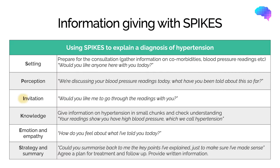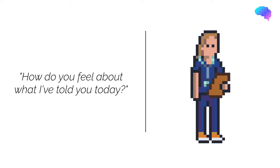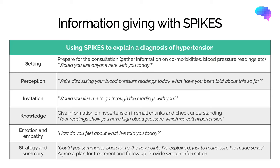We then obtain the patient's invitation to proceed with the discussion — for example: 'Would you like me to go through the readings with you?' Moving on to knowledge, we give information on hypertension in small chunks and check the patient's understanding as we go along. We then explore any emotions the patient may have and display empathy — for example: 'How do you feel about what I've told you today?' Some patients may be quite shocked and upset about being diagnosed with high blood pressure. Finally, in the strategy and summary stage, we check the patient's understanding by asking them to summarise back the key points, then negotiate an appropriate treatment plan and arrange any follow-up.